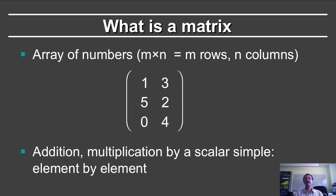So if you add one matrix to another matrix, you just do element by element addition. If you want to multiply a matrix by a scalar, you just scale up all the elements by a scalar.